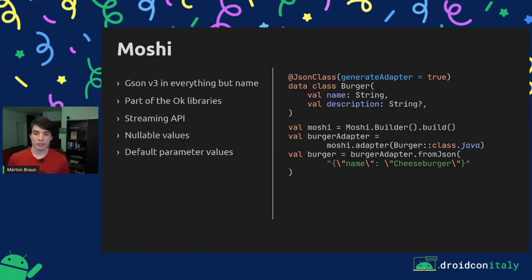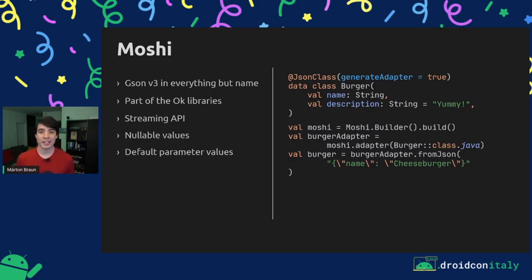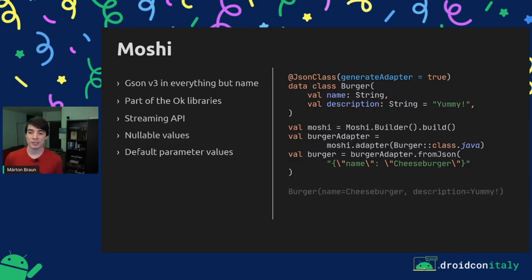Let's go on to default parameter values, which is also something Moshi recognizes. We can use this same class and provide a default description for all our burgers — if we don't know anything else about our burgers, we're just going to assume that they're yummy. That's a fair assumption. If we again try to parse the same JSON, you will see that Moshi uses the default value for the description correctly.